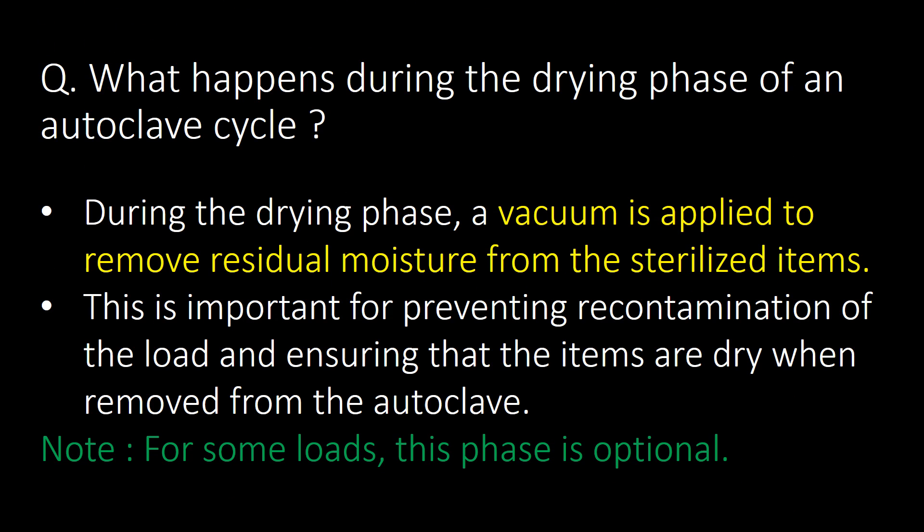What happens during the drying phase of an autoclave cycle? During the drying phase, a vacuum is applied to remove residual moisture from the sterilized items. This is important for preventing recontamination of the load and ensuring that items are dry when removed from the autoclave. For some loads, this phase is optional.